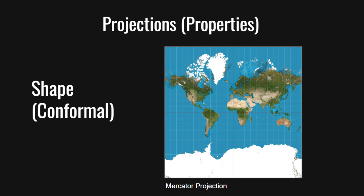For instance, Australia on a conformal projection will have the same shape as Australia on a globe. However, one side effect is that in order to conserve shape, area is very distorted. In one of the most famous projections, the Mercator projection, while the shape of Greenland is accurate, it is widely distorted by area, resulting in it appearing larger than the whole continent of Africa, while in reality it is only approximately the size of Algeria.